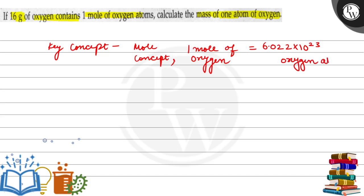And this 6.022 into 10 to the power 23 is nothing but Avogadro's number. So if we have 1 mole of oxygen atoms, then we can calculate mass of 1 atom of oxygen.